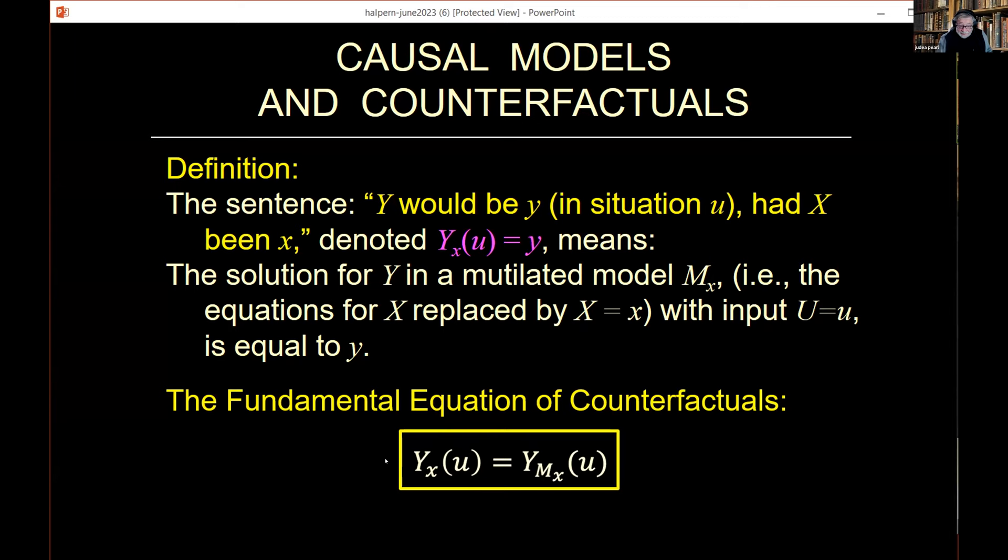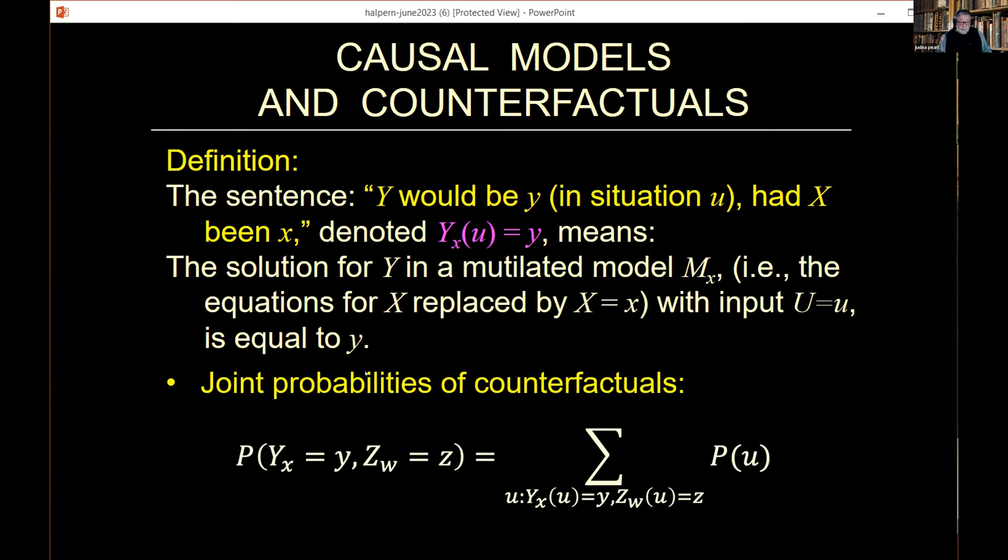Now we have a definition of counterfactuals which is very simple. It's just a solution of the equations in a mutilated model. It has some properties. First, we can easily define joint probability of counterfactuals. That's something which is miraculous. Because many good scientists, good statisticians claim that counterfactuals are for the birds. You cannot define it because you cannot find joint probability on things which are conflicting. What if they conflict? No problem.